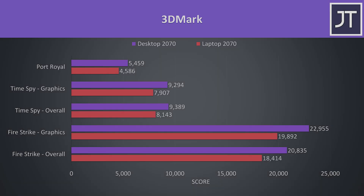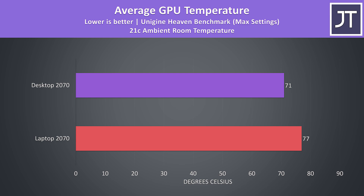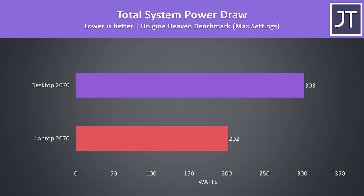Outside of gaming, the desktop was around 15% higher in the 3DMark Firestrike graphics score and 18% higher for Timespy. Although temperatures aren't a fair comparison due to different form factors, the desktop was 6 degrees cooler — though this will vary based on the specific graphics card and cooler design. Interestingly, despite the desktop PC pulling 50% more power from the wall under a GPU-only stress test, it was still able to run cooler.